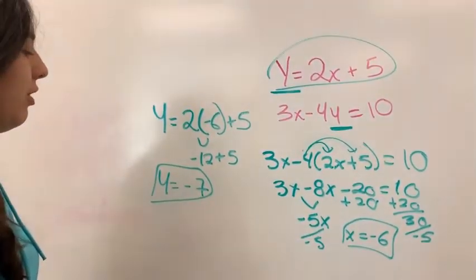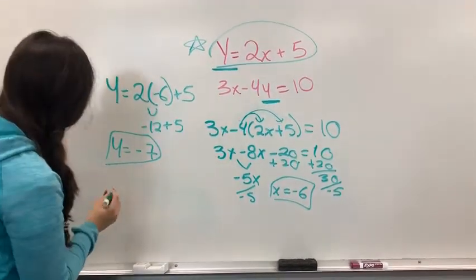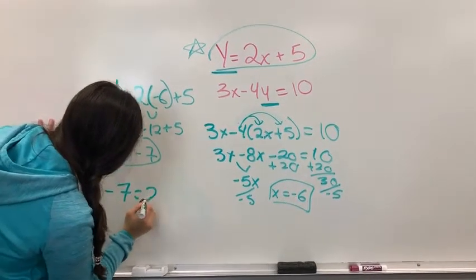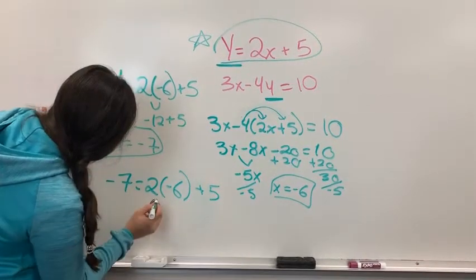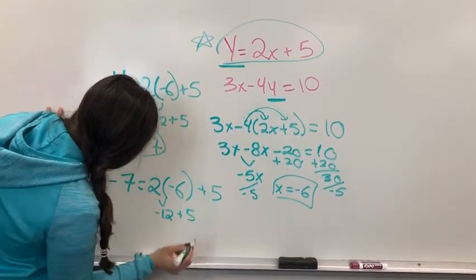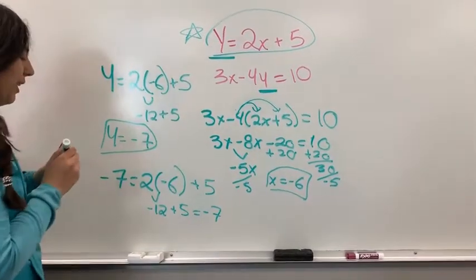And if you want to check your answers, just to double check, you could just use the same equation. And you could do negative 7 for the y equals 2 times negative 6 for x plus 5. And you have negative 12 plus 5 equals negative 7. So it's right.